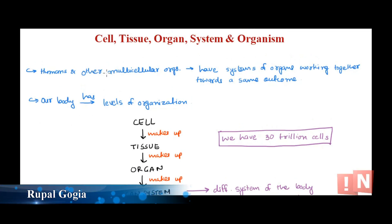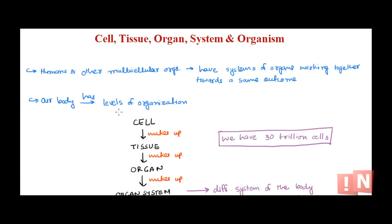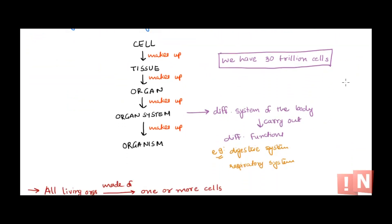Hey guys, welcome back. Today we are talking about levels of organization in our body — from cell to organism, how cells form an organism. We know that we humans are multicellular organisms. Any multicellular organism is made up of many types of cells. We have organs and different systems in our body, all made up of cells. We humans have 30 trillion cells.